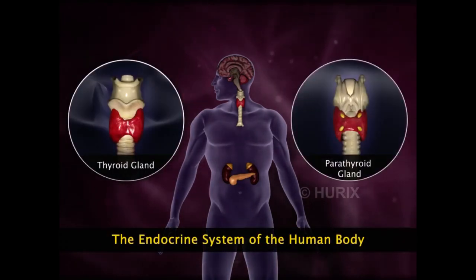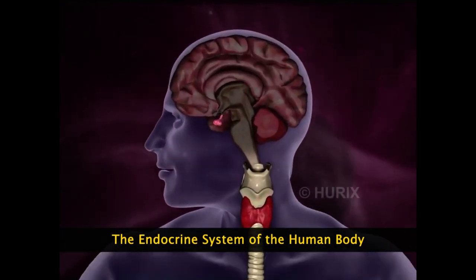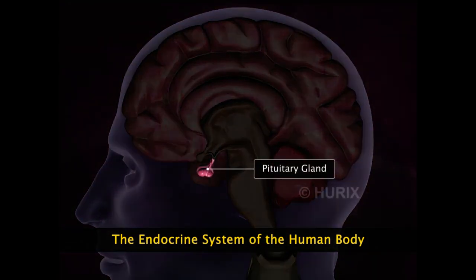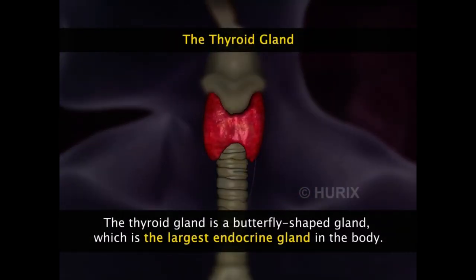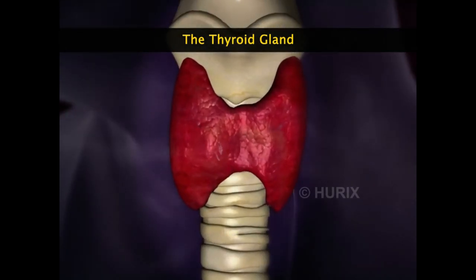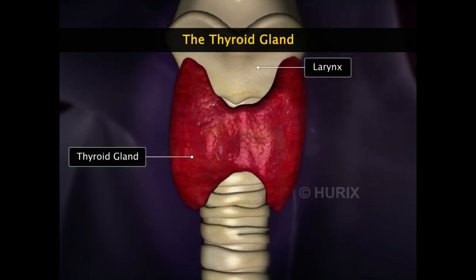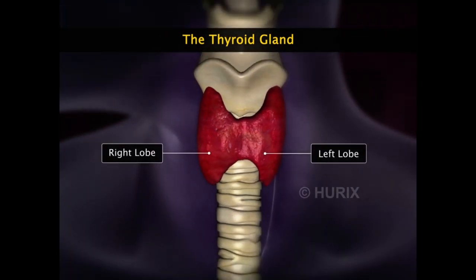The thyroid and the parathyroid gland are two endocrine glands of the body that are under the direct control of the master endocrine gland, the pituitary. The thyroid gland is a butterfly-shaped gland located in the neck region and is the largest endocrine gland in the body. It is located below the voice box or the larynx and is made up of two lobes located on either side of the windpipe or the trachea. The two lobes are connected by a thin band of tissue called the isthmus.